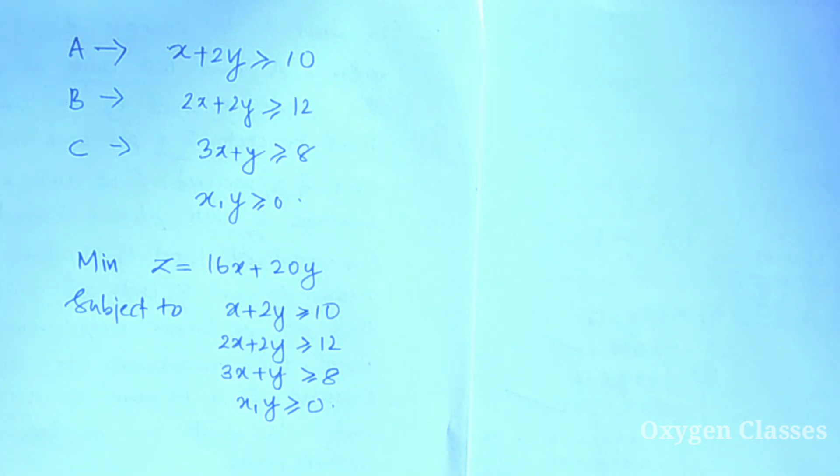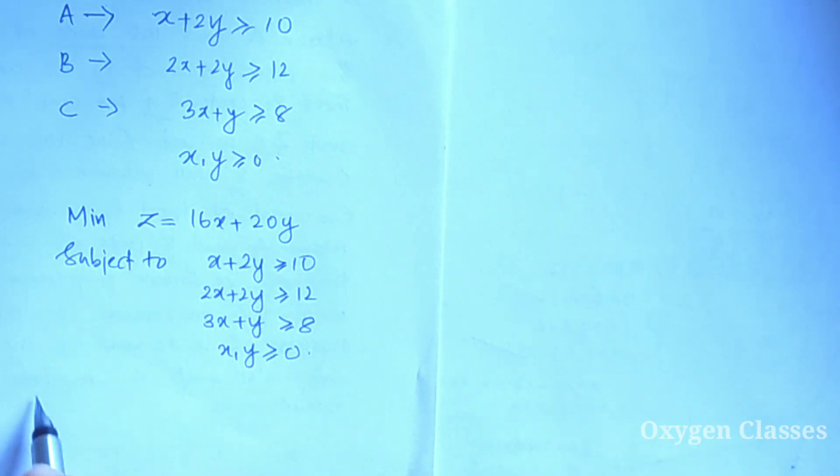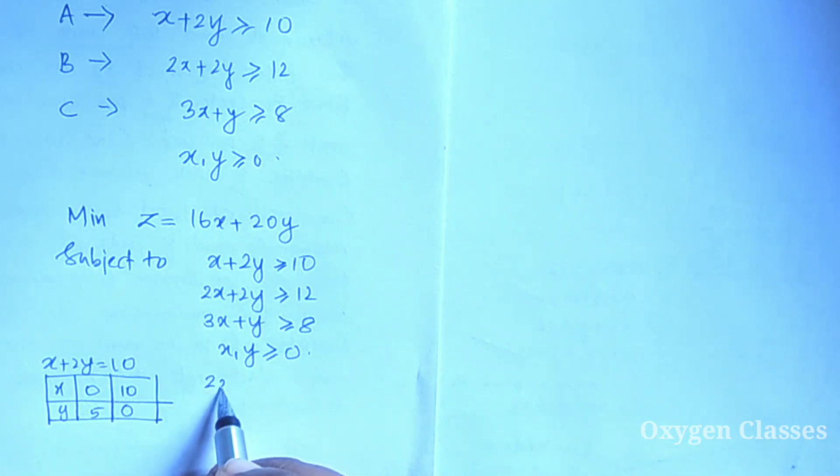Now we need to solve this graphically. First line is X plus 2Y equal to 10. If X is 0, Y is 5. If Y is 0, X is 10. Second line: 2X plus 2Y equal to 12, that is X plus Y equal to 6. If X is 0, Y is 6. If Y is 0, X is 6.